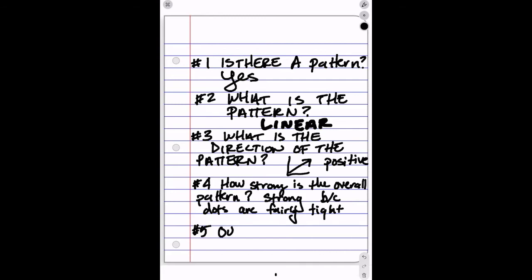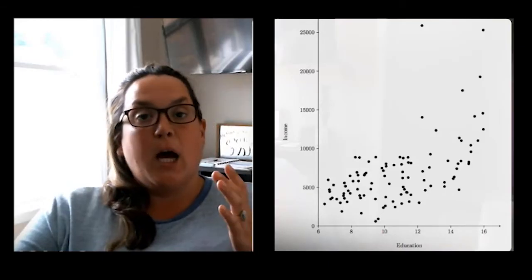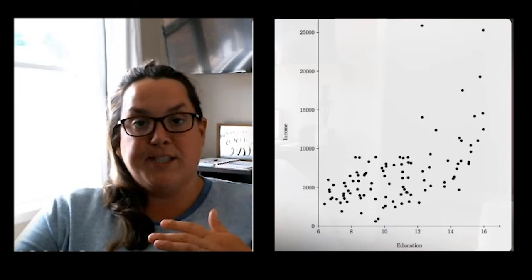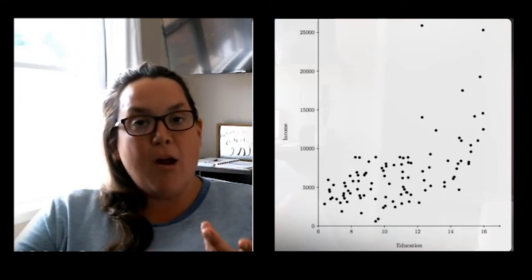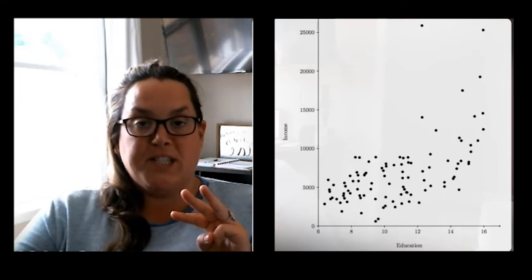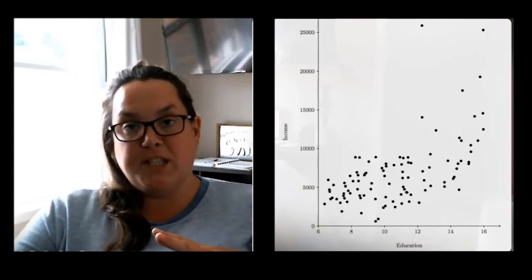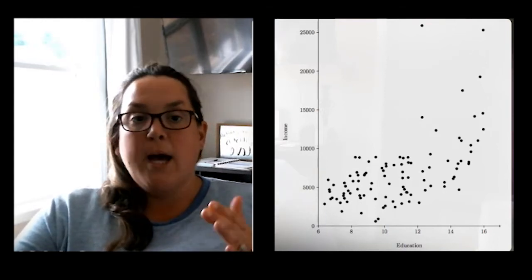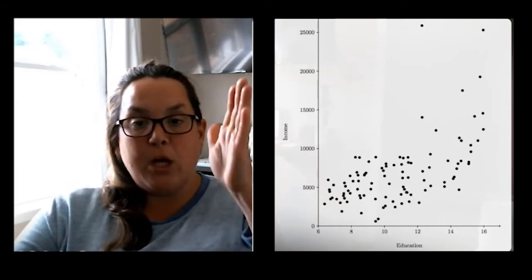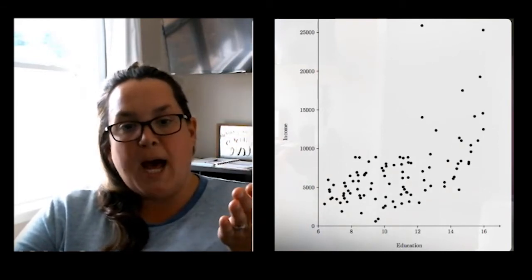The last and final question is, are there any unusual data points or outliers? Remember, an outlier can be present for one of three reasons. One reason can be it's extreme in x. Another reason can be that it's extreme in y. When you look at this scatterplot, you can see that there are really no extreme in x. So we have from six years of education up to about 16.